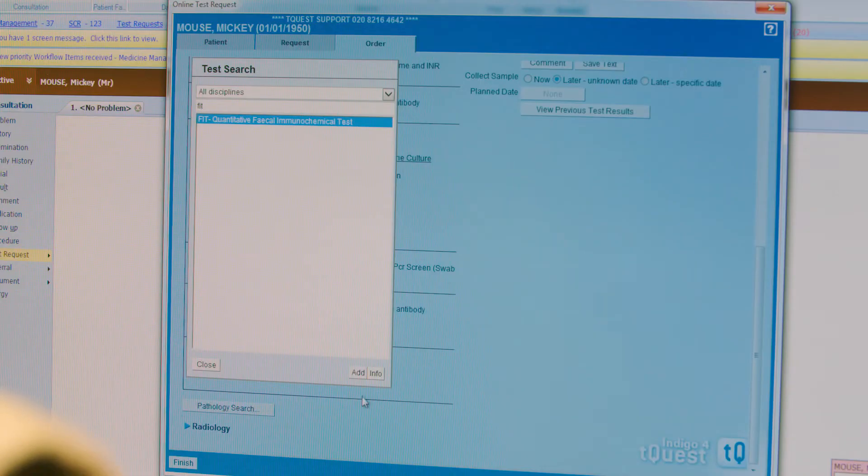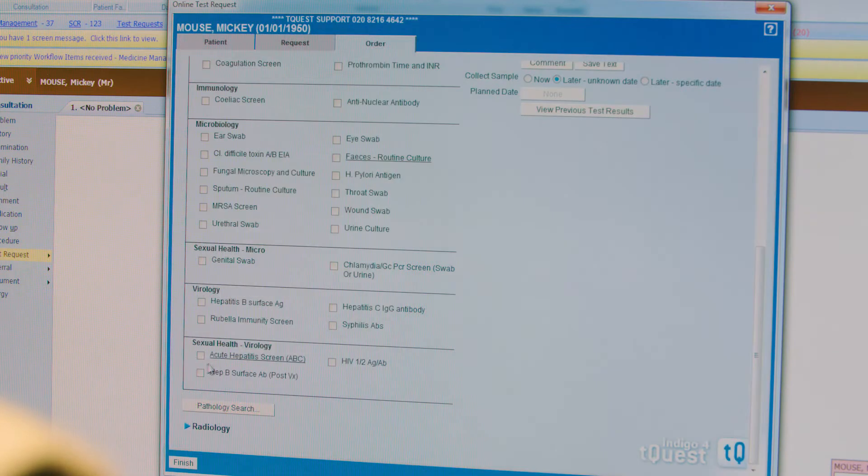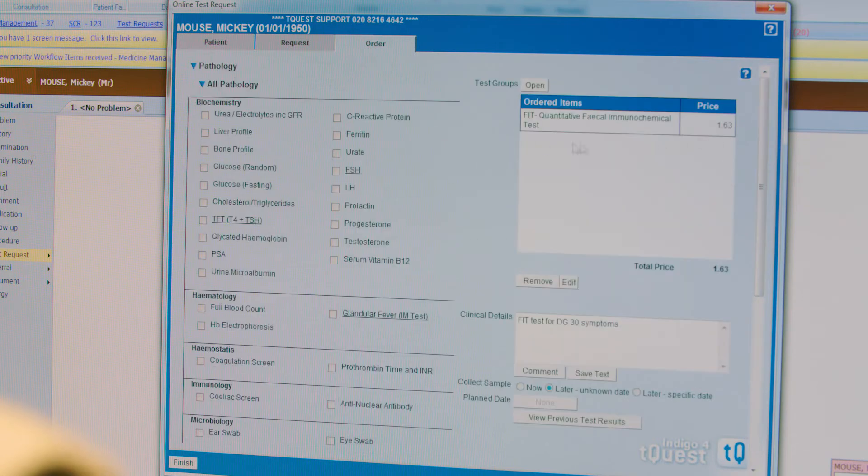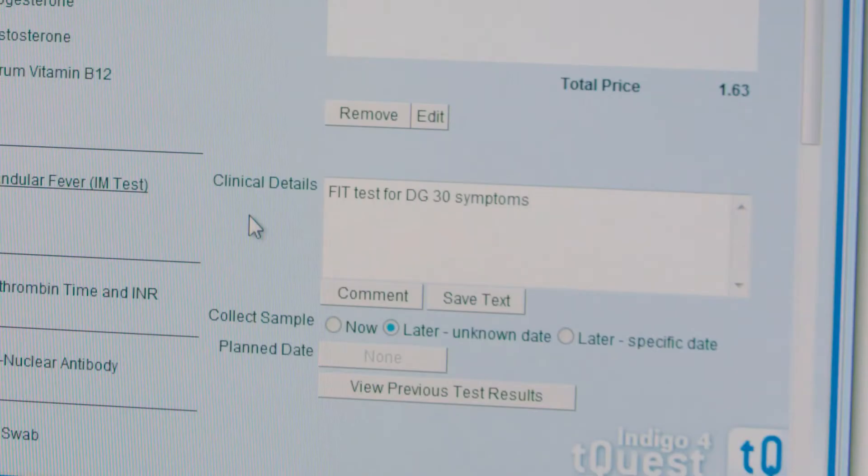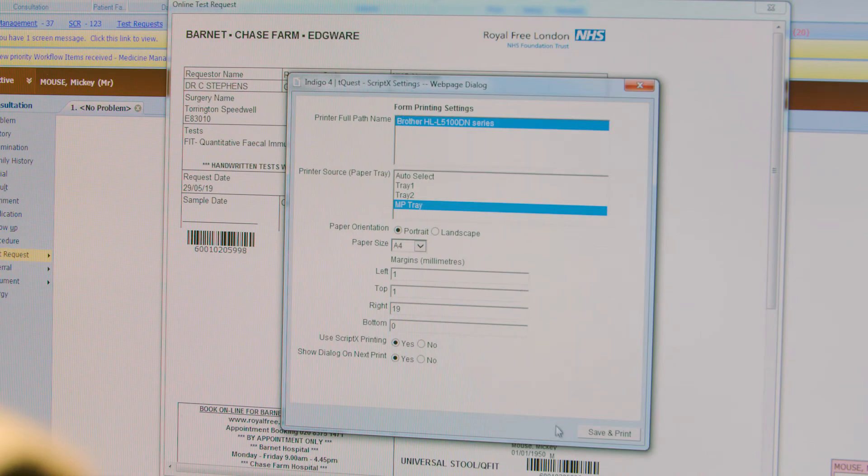This test is still highlighted, so I can go to Add. And then I close that box up to the top, check it's been ordered, and there it is. You'll see there's an opportunity to put some clinical details in, which you need to do. And I finish. And it now gives me the opportunity to print.